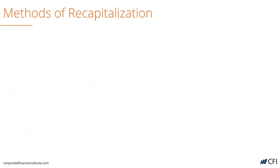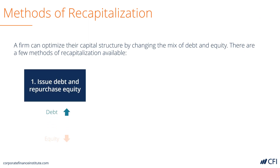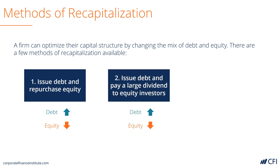Let's look at how a company can recapitalize to change its capital structure. One option is to issue debt and repurchase equity. If a company uses the proceeds from issuing debt to buy back shares, it will increase the proportion of debt and decrease the proportion of equity. Alternatively, a company could issue debt and then pay a large dividend to its equity investors, which would have the exact same effect as buying back shares.